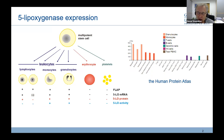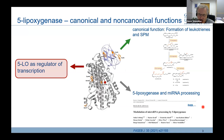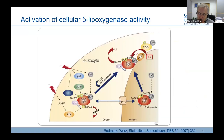The main expression of 5-LOX is within immune cells — leukocytes. Today I will cover two fields we've been working on. First, the catalytic activity — the canonical function, which is the conversion of polyunsaturated fatty acids to bioactive molecules. Then I will focus on 5-LOX as a regulator of transcription, including its interactions with dicer and microRNA processing.